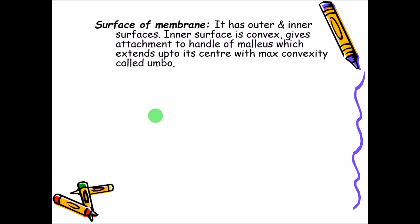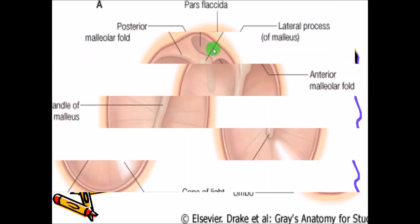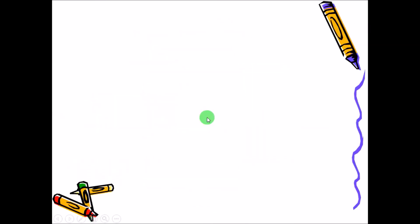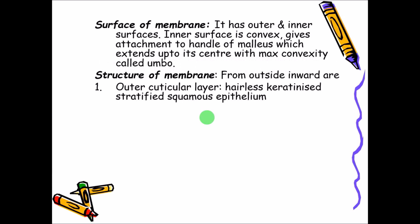Coming to the surface of the membrane — as mentioned, it is trilaminar in nature. It has outer and inner surfaces with a layer in between. The inner surface is convex and gives attachment to the handle of the malleus. What you are seeing in one picture is the view from outside, and another is from inside.